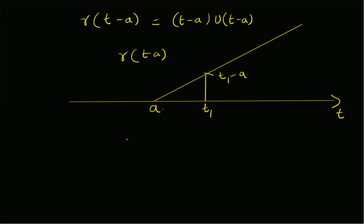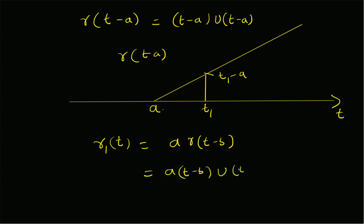That is the nature of a shifted ramp signal. Now for the case of a scaled ramp signal, let us say r1(t) is equal to a times r(t minus b). In that case it will be a shifted ramp signal multiplied by a scaling factor a, meaning it can be represented as a times (t minus b) multiplied by u(t minus b).